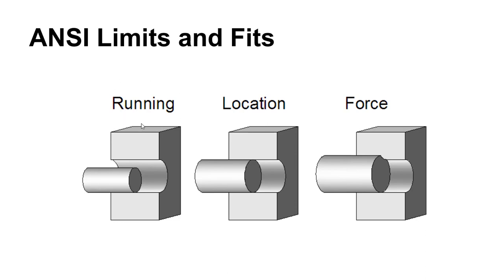Generally, a running fit is one where the shaft has to be able to move inside the hole — like a rotating shaft inside a bushing, for example. Another example would be putting an end mill into an end mill holder; it needs to be able to slide in and out. It's not that it's going to be spinning while the parts are in use, but you need to be able to put the parts together.